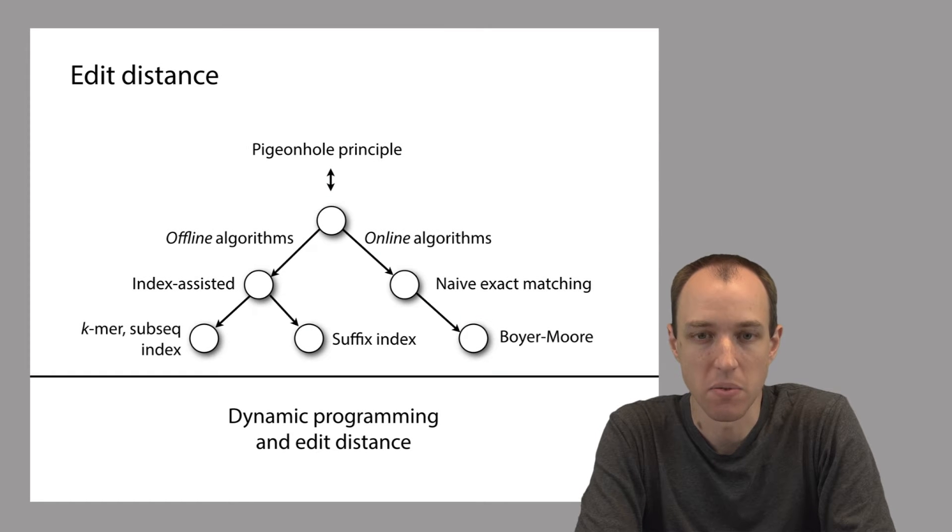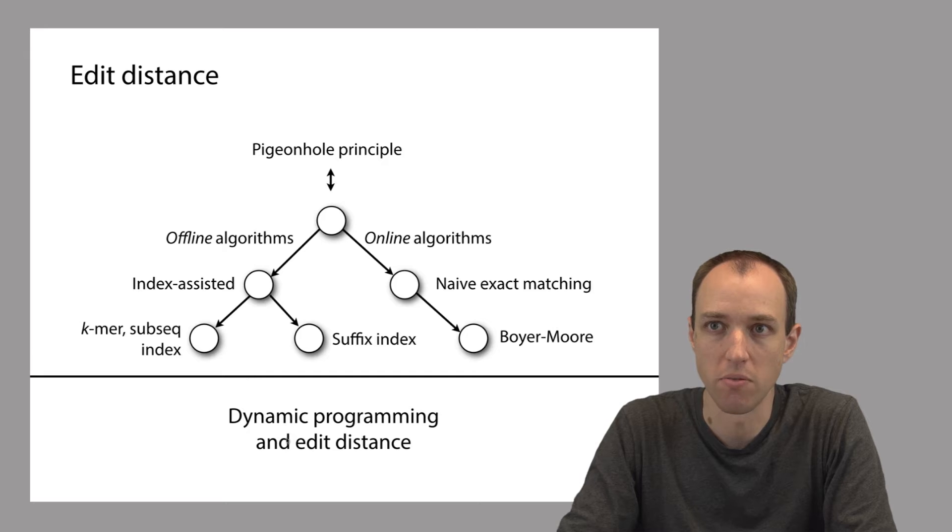We talked before about one way of solving the approximate matching problem using the pigeonhole principle. In this lecture we're going to discuss a new family of methods that use dynamic programming and the idea of edit distance, but they also solve the approximate matching problem. This new family of methods is very flexible. It's used to solve many different biosequence analysis problems including global alignment and local alignment. Dynamic programming and edit distance don't depend on any exact matching algorithms in the same way that the pigeonhole principle method did, so we'll think of it as being a separate class of algorithm from the kinds we've examined so far.